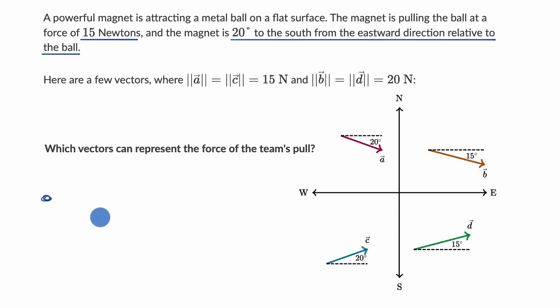It's 20 degrees to the south from the eastward direction relative to the ball. So if this is the ball right over here, and if this is the eastward direction, the magnet is 20 degrees to the south from eastward. So the magnet would be in this direction, and this angle right over here is 20 degrees.